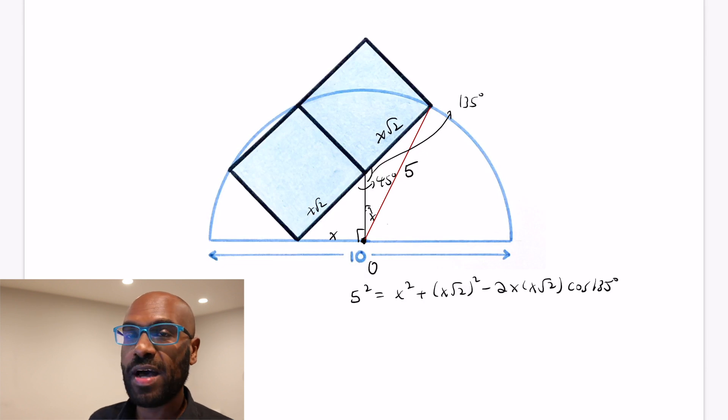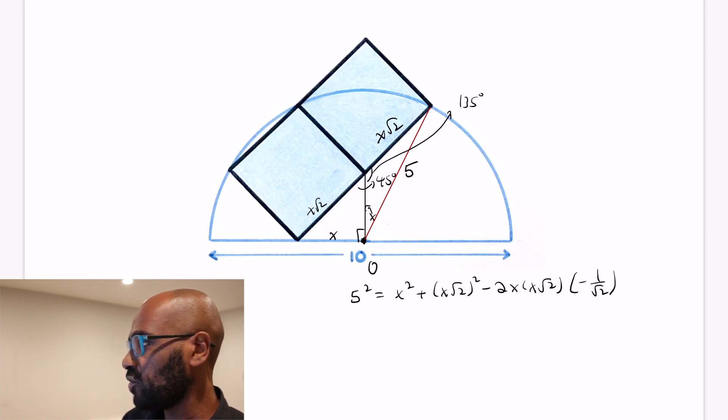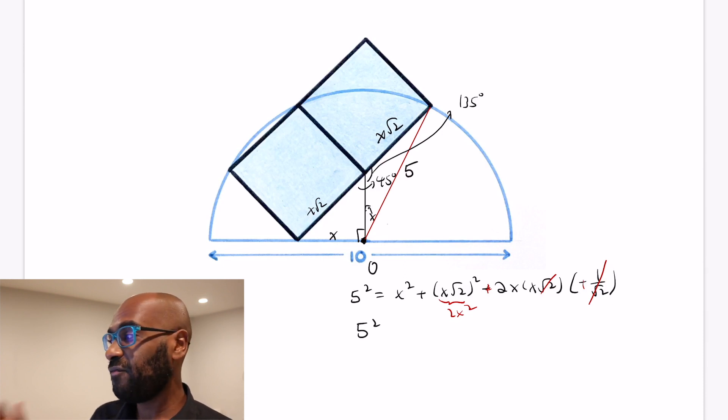We get 5 squared is x squared plus x root 2 squared minus twice x times x root 2 times the cosine of 135. The cosine of 135 itself is negative 1 over root 2. And so we can do some cleaning up of the situation here. So the root 2 and the 1 over root 2 cancel. The two negatives give us a plus. And x root 2 all squared is 2x squared. So together we get that 5 squared is 5 copies of x squared.